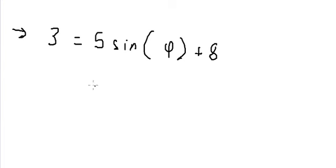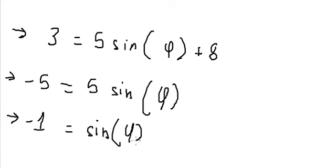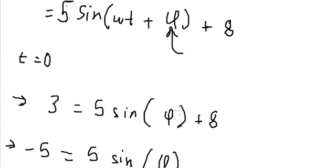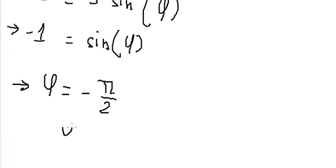We put 8 on the left: 3 minus 8 gives us negative 5. Then dividing both sides by 5 gives us negative 1. So we can find the phase constant — it equals negative pi over 2. And omega is about 2 pi over T.